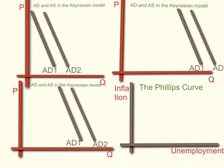John Maynard Keynes used the aggregate demand and aggregate supply model to explain that an increase in total spending — for example, an increase in government spending — would increase GDP. So if you look at the first graph here, we can see AD1 and AD2. Those are the aggregate demand curves, and there's a shift and increase in aggregate demand here.